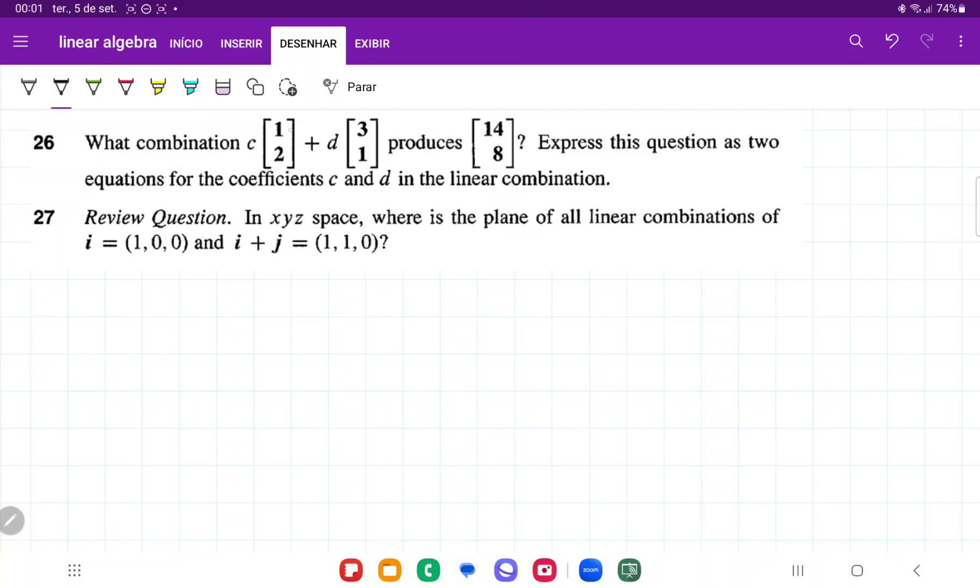So basically here, we're going to sum up 1 scaled by c plus 3 scaled by d, and that should give us 14. So that's the first equation: 1c plus 3d equals 14.